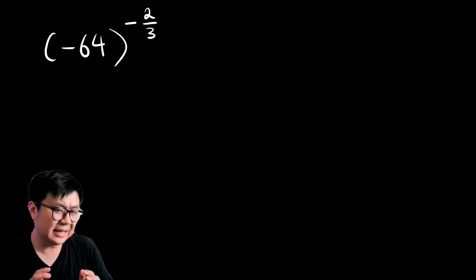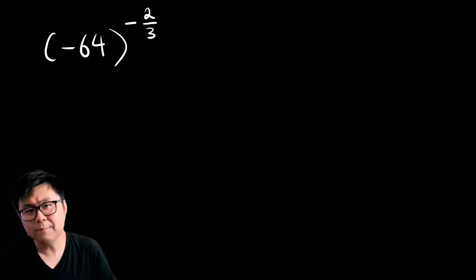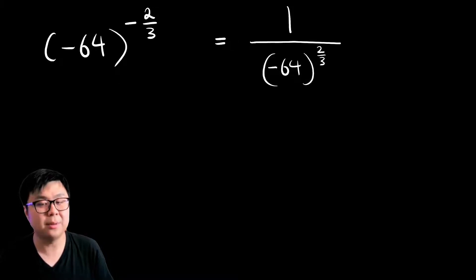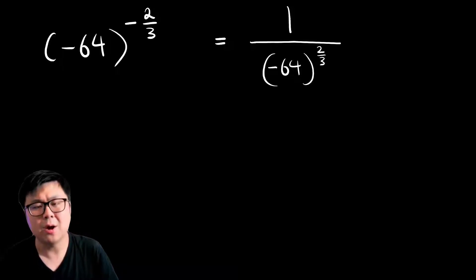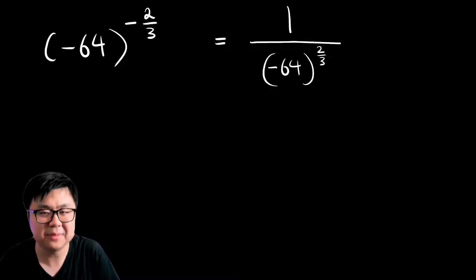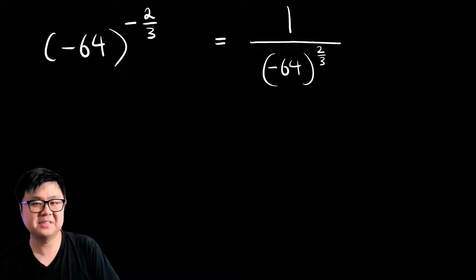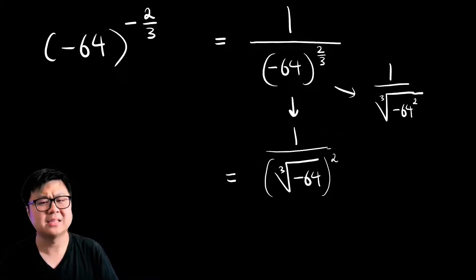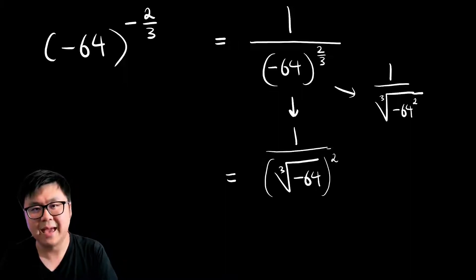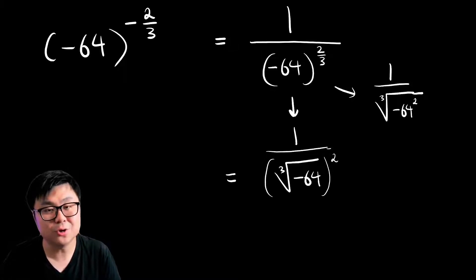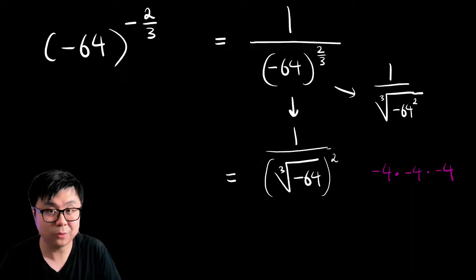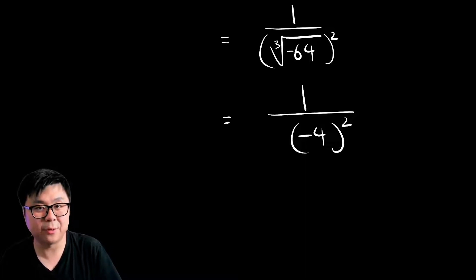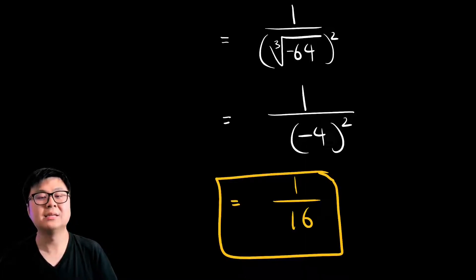Moving right along, now we have negative 64 in brackets to the power of negative two-thirds. We have to deal with the negative exponent first — it's not happy in the numerator, so we move it down to the denominator. The exponent becomes positive, but the negative 64 stays negative. There's nothing left in the numerator, so we put a 1 there. Now we can deal with the rational exponent in the denominator: negative 64 goes into the radicand, 3 goes in the index, and the 2 stays as the exponent on the outside.